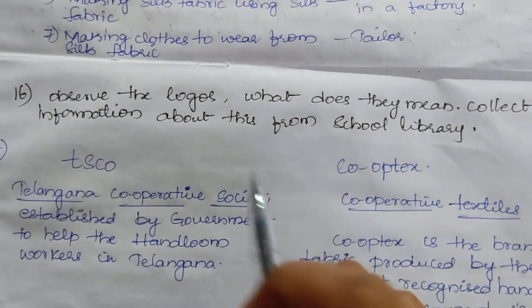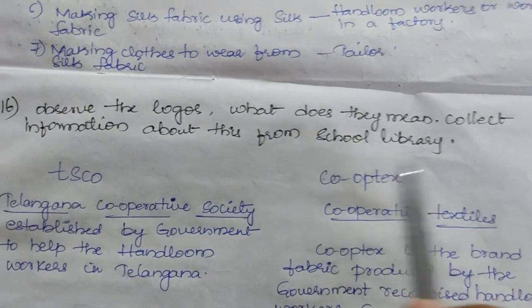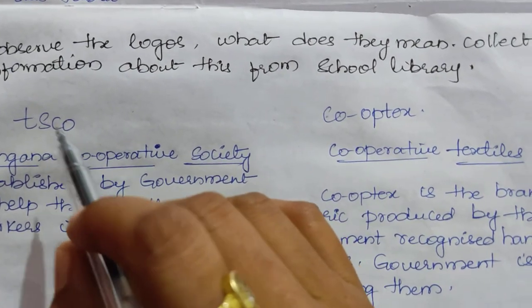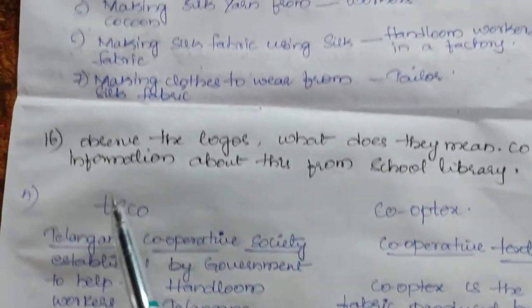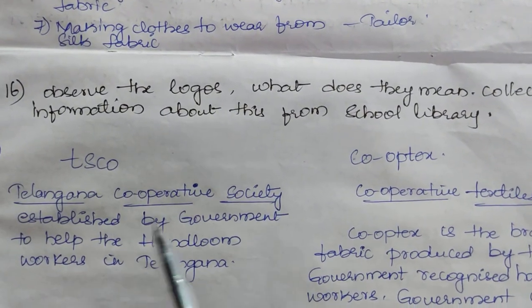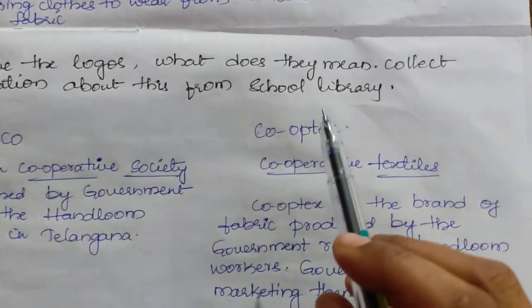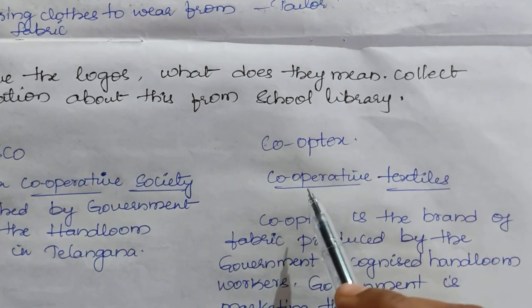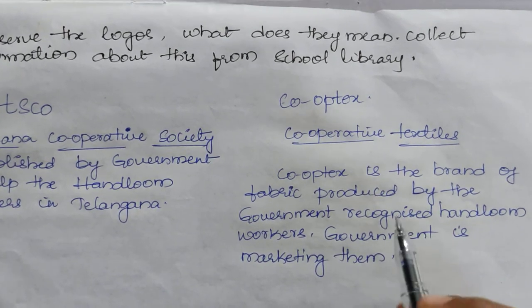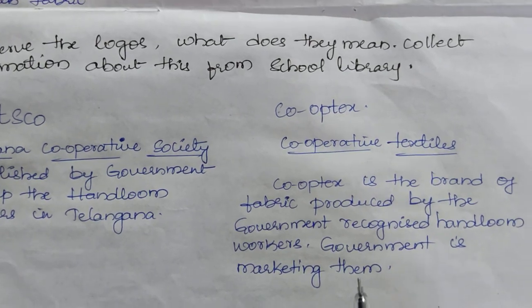Question 16: observe the logos given in the textbook — what do they mean? Collect information from the school library. TSCO is the logo which depicts the Telangana Cooperative Society, established by the government to help handloom workers in Telangana. Cooptex is a brand of fabric produced by government-recognized handloom workers, and the government markets them.